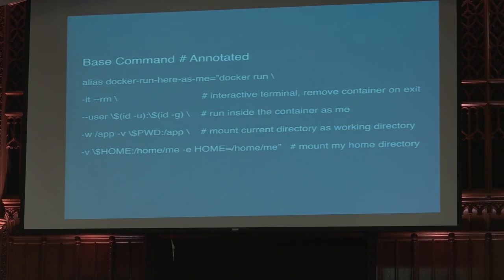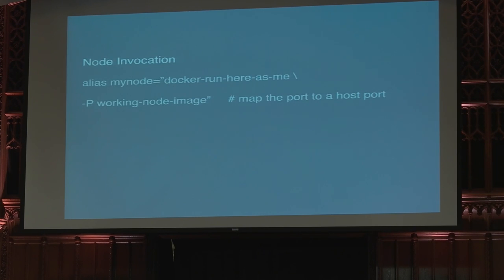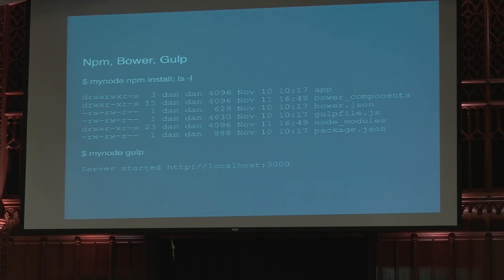You run inside the container as yourself, and you mount the current directory and your home directory so that they're available to your tools. So instead of installing Node, Bower, and Gulp, you have a Docker image from Node with Bower and Gulp inside it. You build that image — the CI=true flag is necessary for Bower because they made a change that asks if you want to contribute statistics. Then when you invoke it, you just run it as yourself. Map your port with -p in case you are hosting a service. Then instead of running NPM install, you run your Node NPM install, and you end up with your Bower components and Node modules. If you run Gulp, you get served — and you've never installed Node.